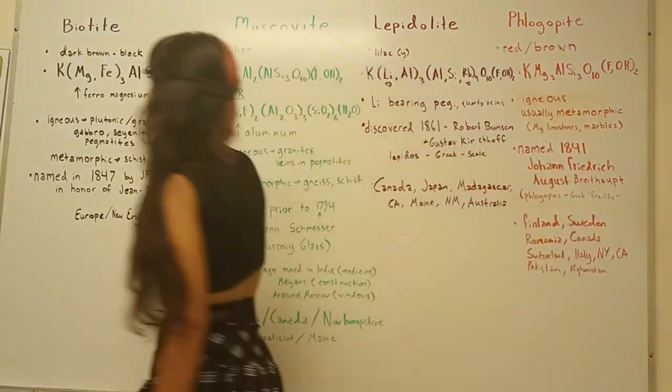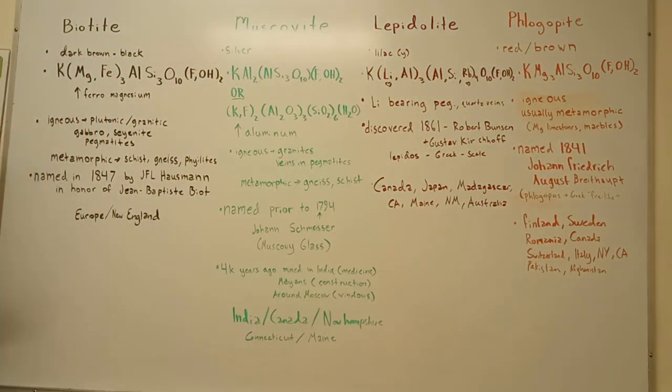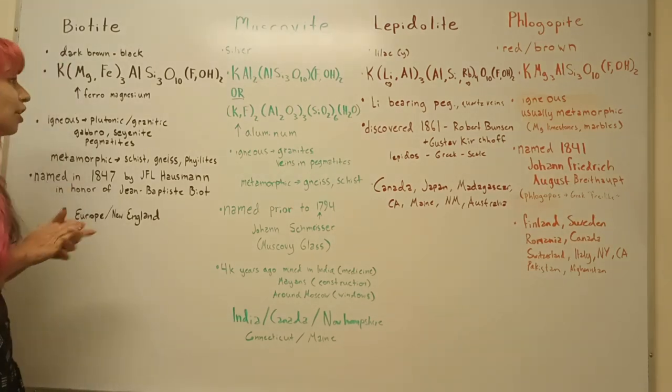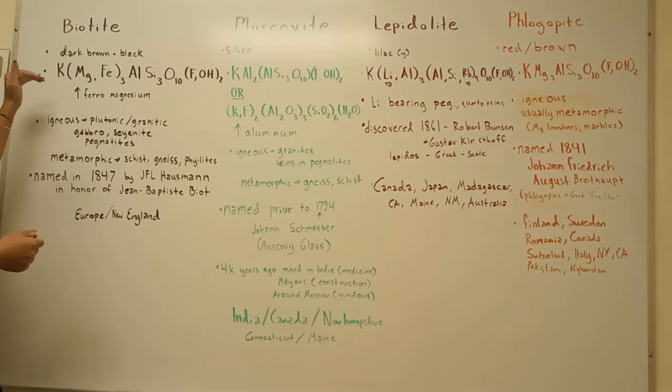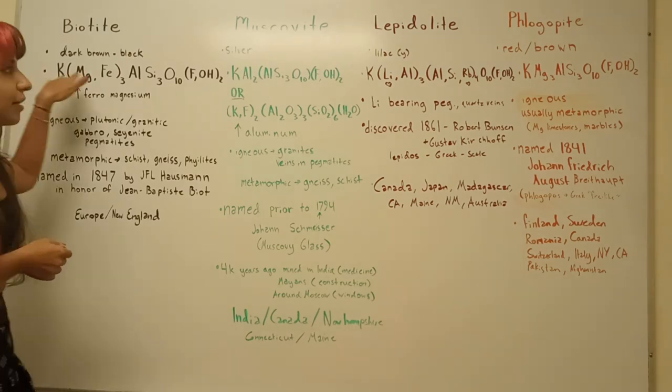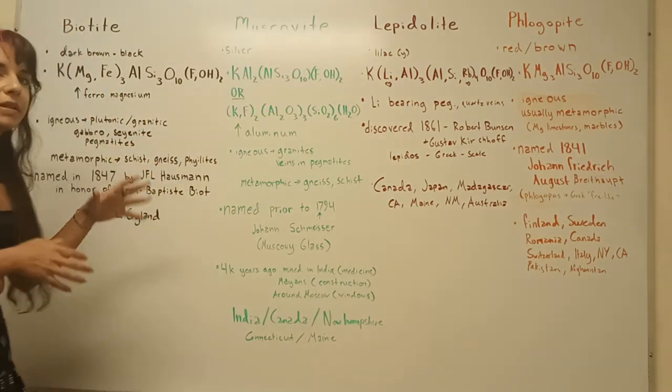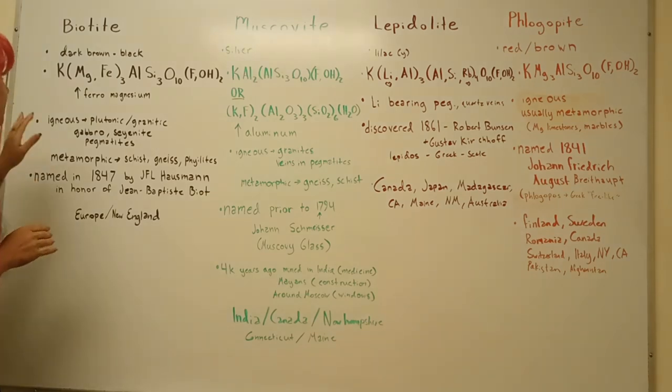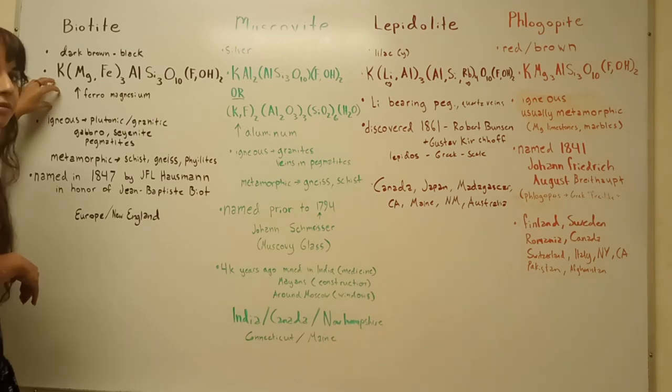So starting off, we're going to do biotite. And so biotite mica is a dark brown or black in color, and then here is our formula. You can see all these formulas are very similar, but there's some variation. And so this is a high iron and magnesium rich mica.